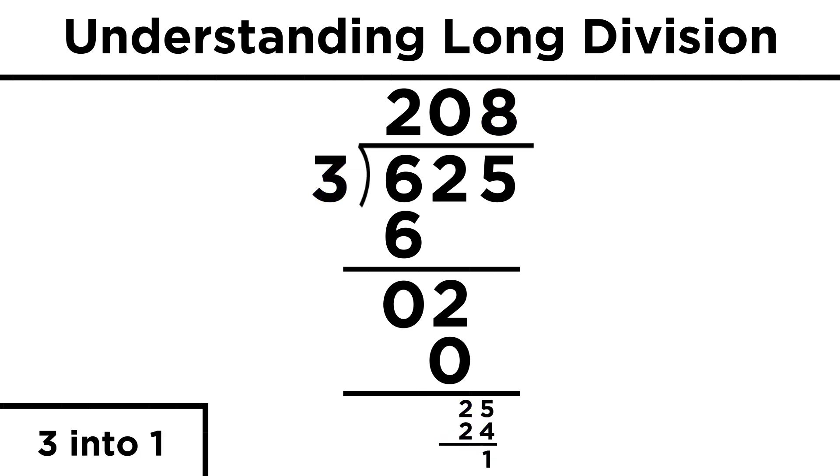Now there are no more digits to drop down, and three doesn't fit into one, so this is called the remainder. Three fits into six hundred twenty-five two hundred and eight times with one left over, or we can say that six hundred twenty-five divided by three is two hundred eight remainder one.